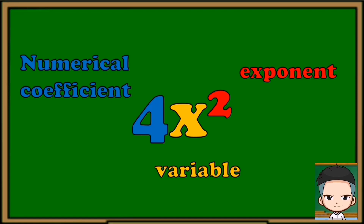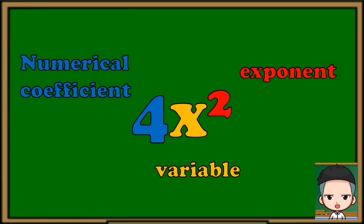And 2 is the exponent. Exponents tell how many times you multiply the base to itself. Usually it is a small-size number at the top right of the variable. Take a look at this example.